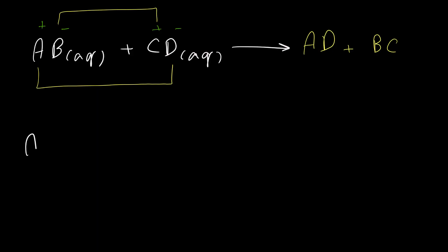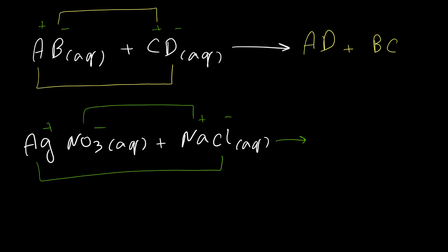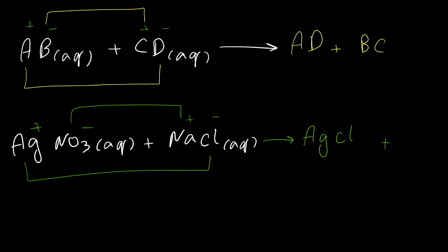We have silver nitrate (aq) and sodium chloride (aq). For writing the product, we should write the product between silver and chloride, and between nitrate and sodium, because all of them have the same charge, so writing the formula for the ionic products is simple. So our products will be AgCl and sodium nitrate.